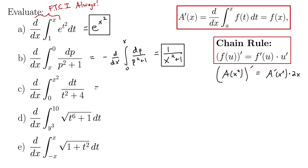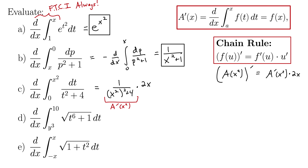So we hit this with the fundamental theorem of calculus, which says we have the same inside remaining, except instead of t we have x squared — because that's what's in the upper limit of integration. So we now have 1 over x squared squared plus 4, times the derivative of the inside, which is 2x. The first term is our A prime of x squared, and the second term is the derivative of x squared, which gives 2x. Cleaning that up: 2x over x to the fourth plus 4. No plus c or anything like that.